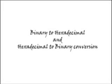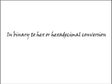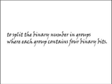Let's have a discussion on binary to hexadecimal and hexadecimal to binary conversion. In binary to hex conversion, first we have to split the binary number in groups where each group contains four binary bits.